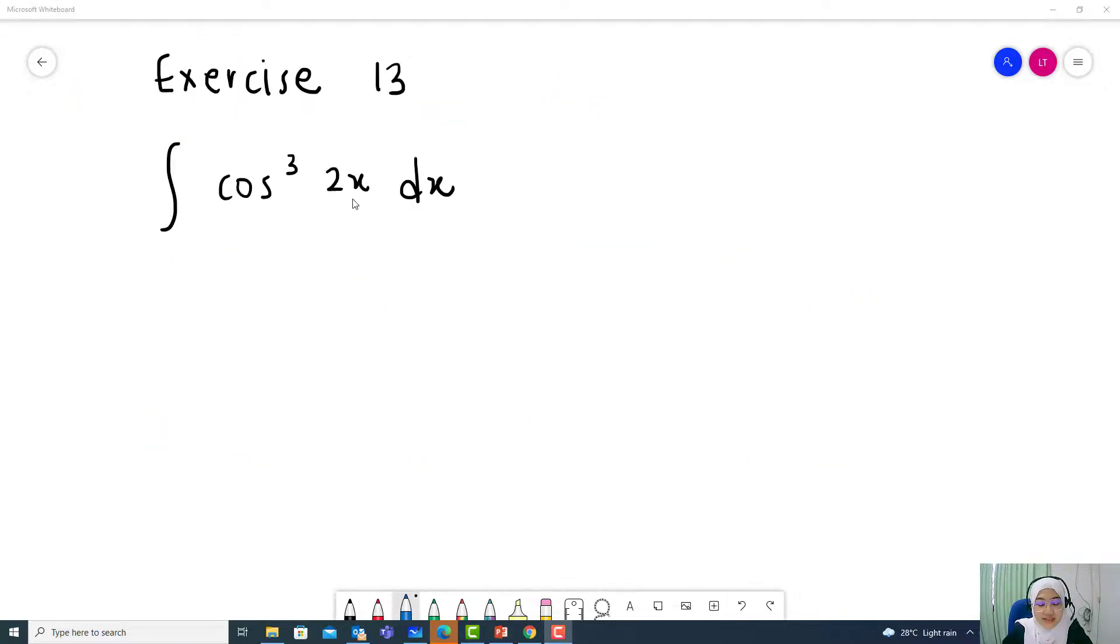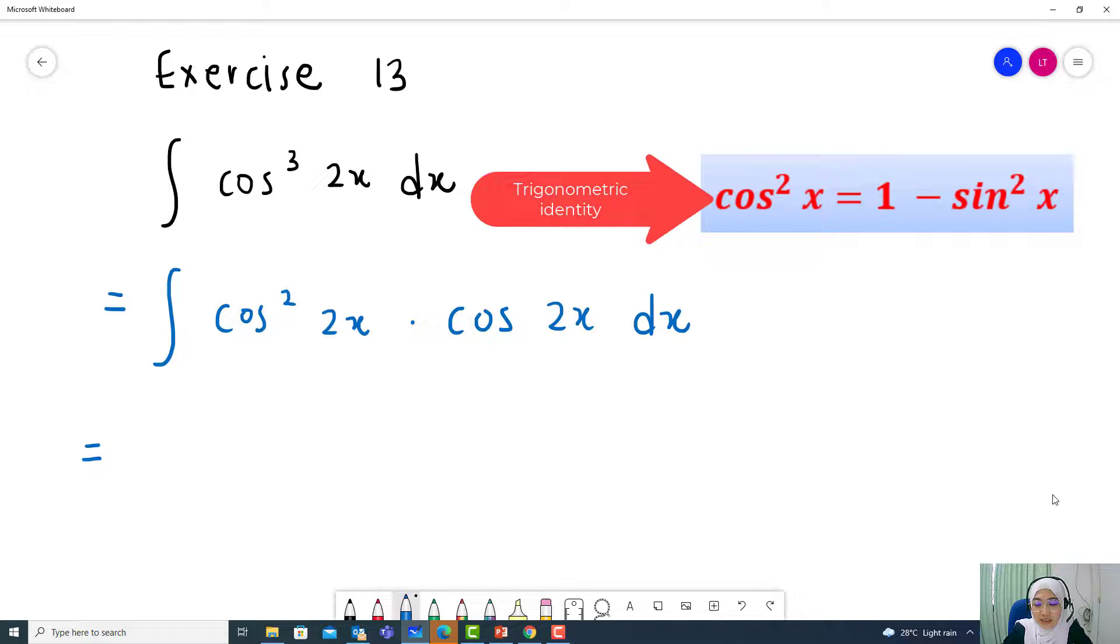Exercise 13, given that the integral of cos cubed 2x dx. First step, you need to factorize this expression. Become cos squared 2x multiply cos 2x dx. Apply trigonometric identity cos squared 2x equal to 1 minus sin squared 2x into this expression.